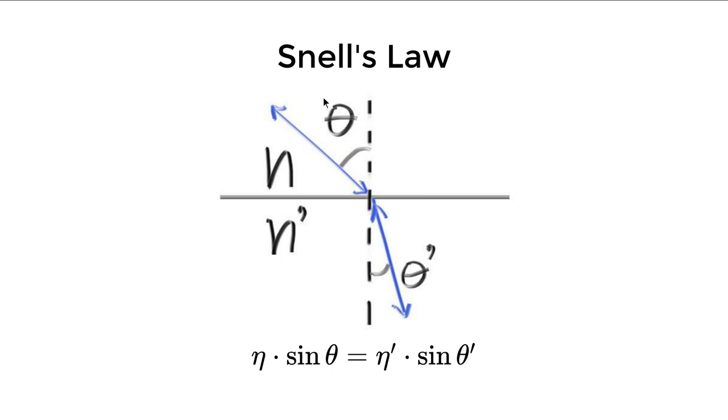So the same law works both if this is the input ray and this is the output ray, or if this is the input ray and this is the output ray. That's why we have this double arrow at both end of the vector to just indicate that it is bi-directional.